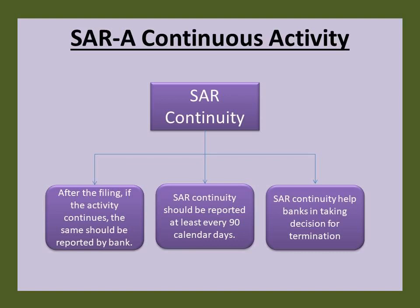Banks should be aware that law enforcement may have an interest in ensuring that certain accounts remain open notwithstanding suspicious or potential criminal activity in connection with those accounts. If a law enforcement agency requests that a bank maintain a particular account, the bank should ask for a written request. The written request should indicate that the agency has requested that the bank maintain the account and the purpose and duration of the request. Ultimately, the decision to maintain or close an account should be made by a bank in accordance with its own standards and guidelines.